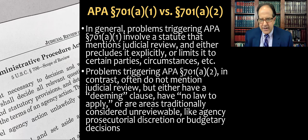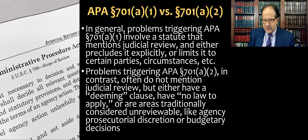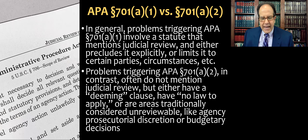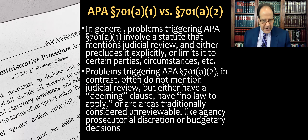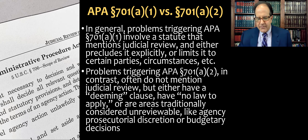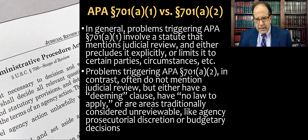Here's a way students should think about this. In general, problems triggering the first type — statutory preclusion — involve a statute that mentions judicial review and either precludes it explicitly or limits it to certain parties or circumstances. The second one, committed to agency discretion by law, often doesn't mention 'no judicial review' — it just has a deeming clause, like 'whenever the director deems it necessary,' or says the director may do something in his or her discretion with no other details about how to make that decision. That's what we call 'no law to apply.'